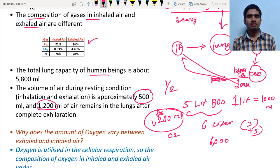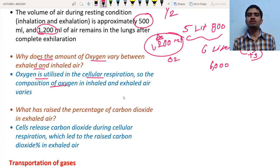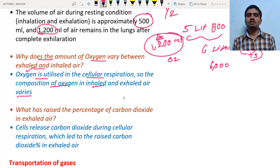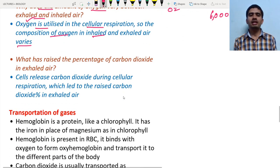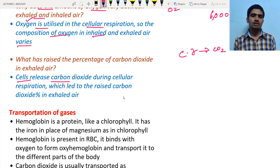The amount of oxygen varies between inhaled and exhaled air because oxygen is utilized in cellular respiration. The percentage of carbon dioxide is raised in exhaled air because cells release carbon dioxide during cellular respiration, along with water and energy.